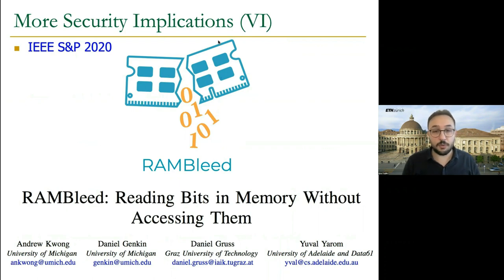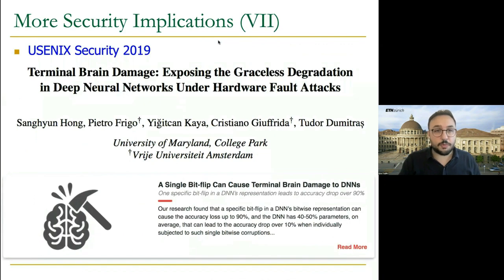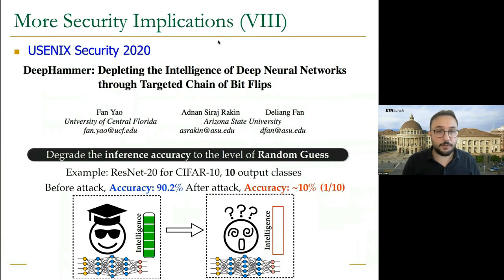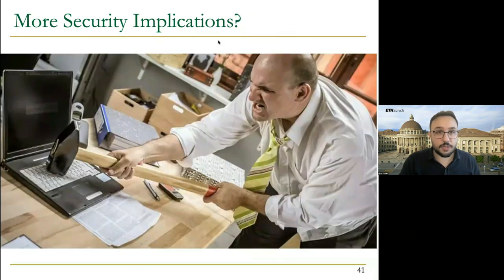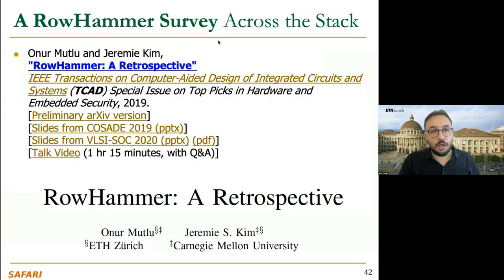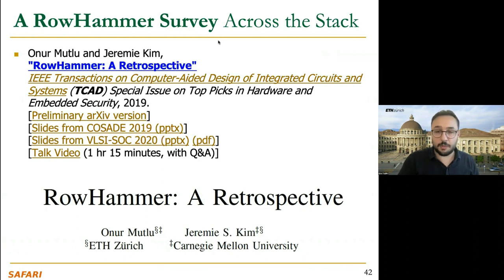Later on, RowHammer found new use cases. For example, some work focuses not on taking over the system but on leaking security-critical data without being noticed. There are also papers proposing that we can induce RowHammer bit-flips in the weights of critical neural network workloads and thereby reduce their accuracy significantly. There is also strong evidence showing that RowHammer is not only a DRAM problem but can also be observed in some non-flash memories and other emerging technologies. So, are there more security implications? The answer is probably yes.